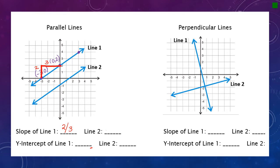Now we're going to do the same thing with line two. I need to find points where it crosses exactly. From this point, I'm going up two and to the right three. So the slope is also two thirds.